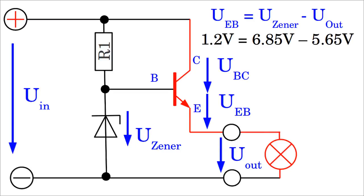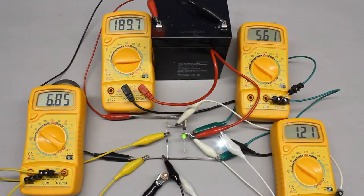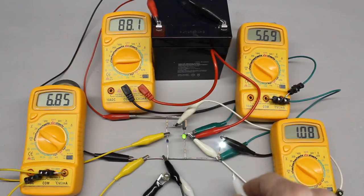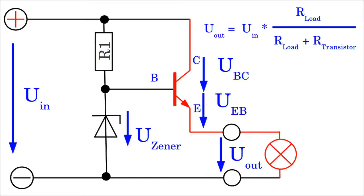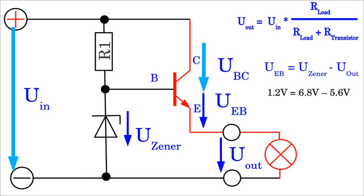On the other hand, if the resistance of the load is increasing, the emitter-base voltage is decreasing, causing an increasing resistance of the emitter-collector line. The decrease in resistance of the load is also counterbalanced by a decrease of the transistor's resistance. An increasing input voltage would result in an increasing output voltage, but also in a decreasing emitter-base voltage and so in an increasing emitter-collector resistance.